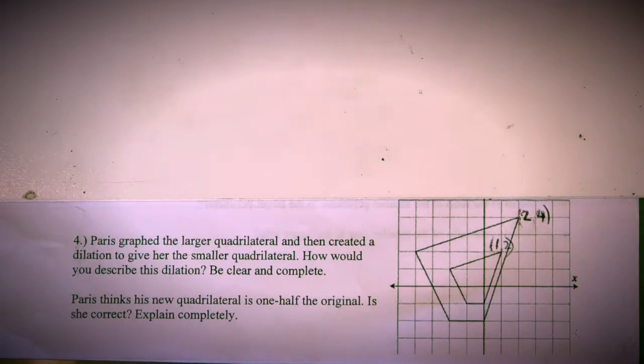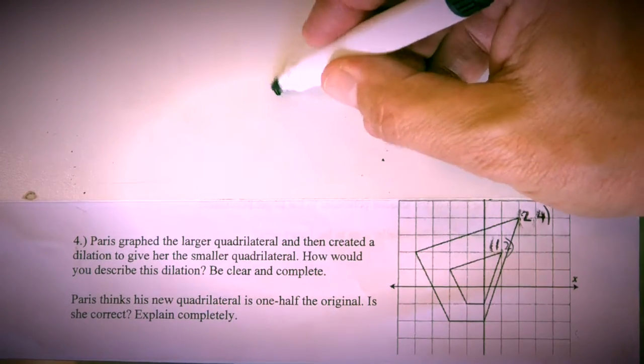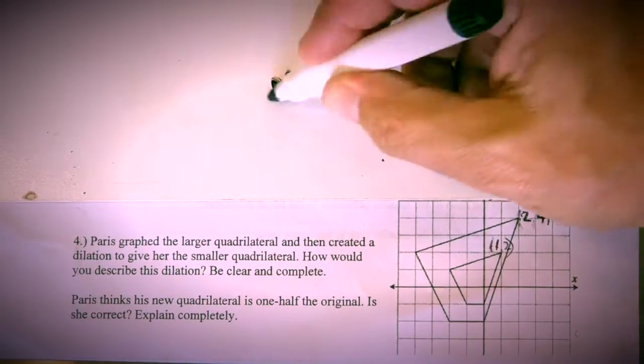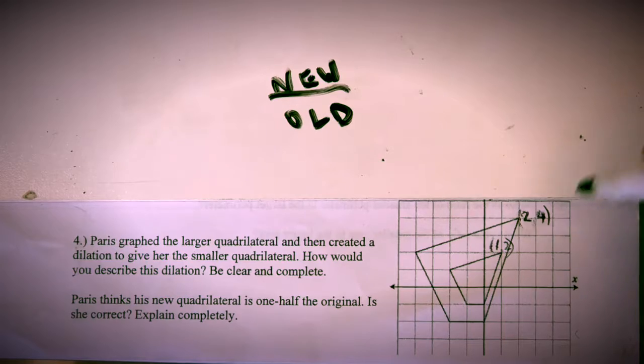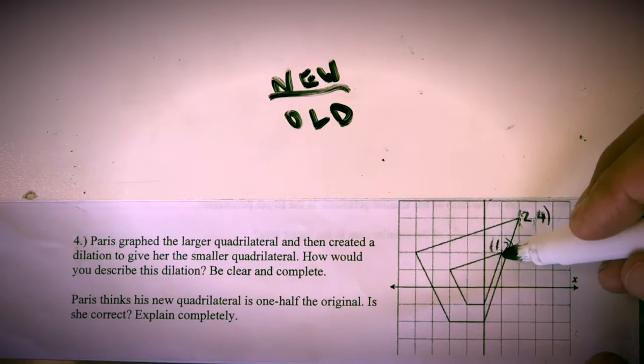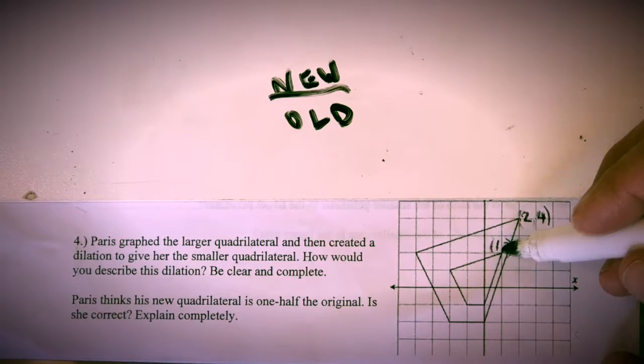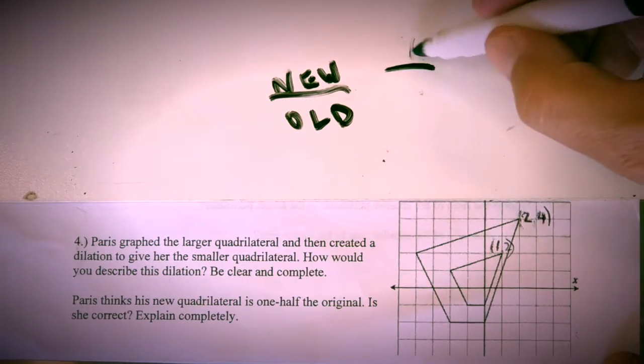That's called the scale factor. What you do is take the new over the old or the original. That's the key formula. Well, we don't have side lengths, but we do have coordinates. The new is one. If we look at the x-coordinate, it's one. So let's just look at the x-coordinates and compare them.